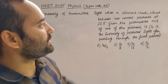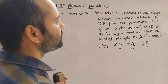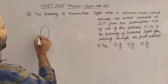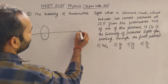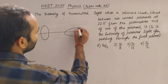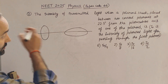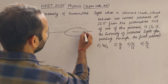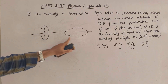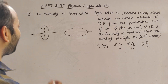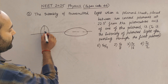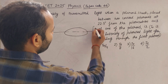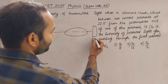Now let's come to the question. The question asks: what is the intensity of transmitted light when a polaroid sheet is placed between two crossed polaroids? Two crossed polaroids means they are perpendicular to each other — the angle between their axes is 90 degrees. This is the standard setup. One polaroid is like this and another polaroid is crossed with it. You have to find the final intensity of light coming out.